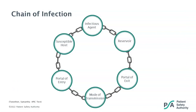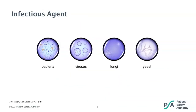The chain of infection consists of six components: the infectious agent, the reservoir, the portal of exit, the mode of transmission, the portal of entry, and finally the susceptible host. The first step is an easy one — the infectious agent. Here we're talking about any sort of bacteria, virus, fungi, or yeast.